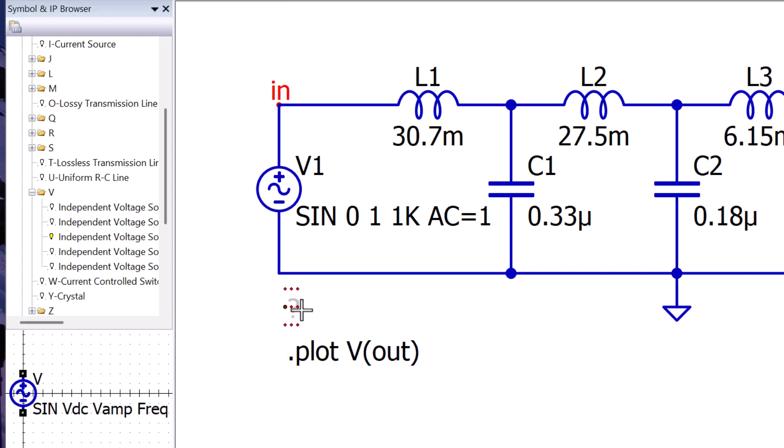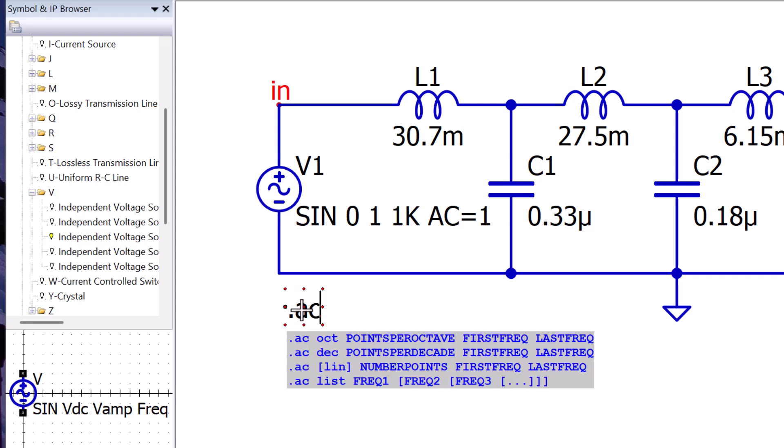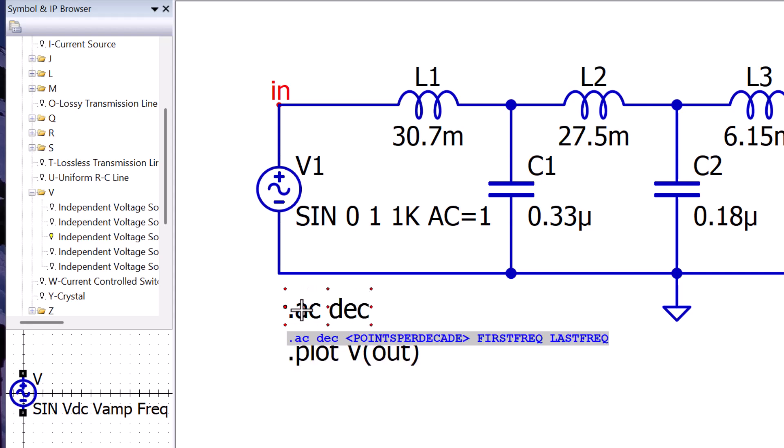Double click and type in .AC for small signal analysis, DEC for decade, 50 for points per decade, 100 Hz starting frequency, and 100 kHz end frequency.